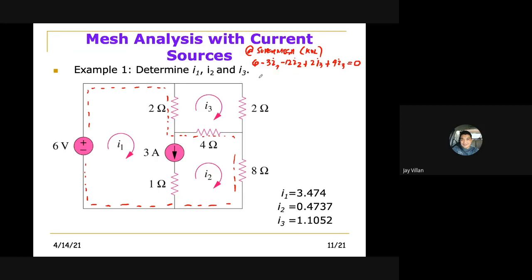Simplifying, we have -3i1 - i1 - 12i2. Then we add this, +6i3, is equal to -6. You can simplify even more, divided by 3. So this is equation 1 using the KVL.